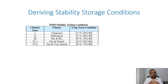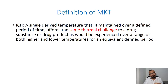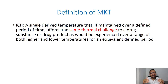Based on the mean kinetic temperature, the entire world is divided into four climatic zones: Zone 1, 2, 3, 4A, and 4B. So let us understand how this mean kinetic temperature is calculated. Before we go on to the calculation formula, let us understand the definition of mean kinetic temperature given in the ICH guideline for stability study, which is Q1AR2: a single derived temperature that, if maintained over a defined period of time, affords the same thermal challenge to a drug substance or drug product.